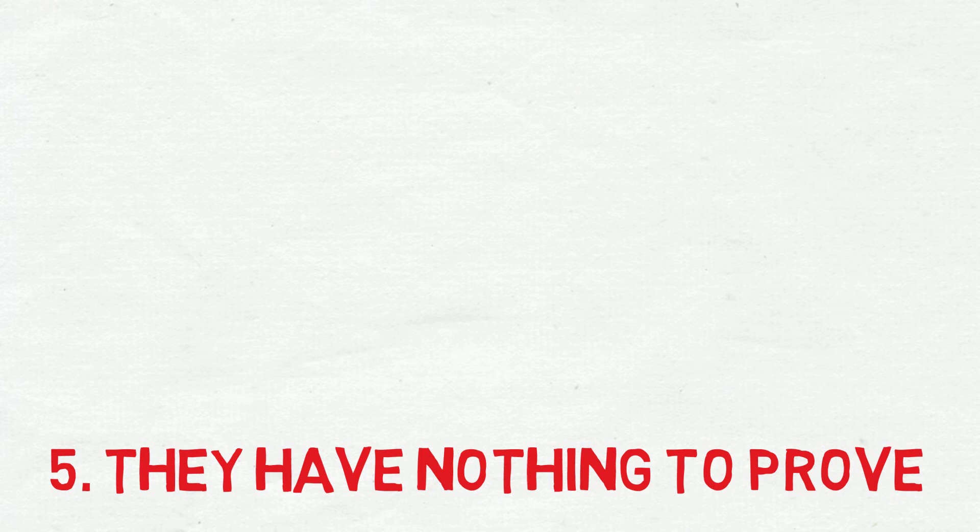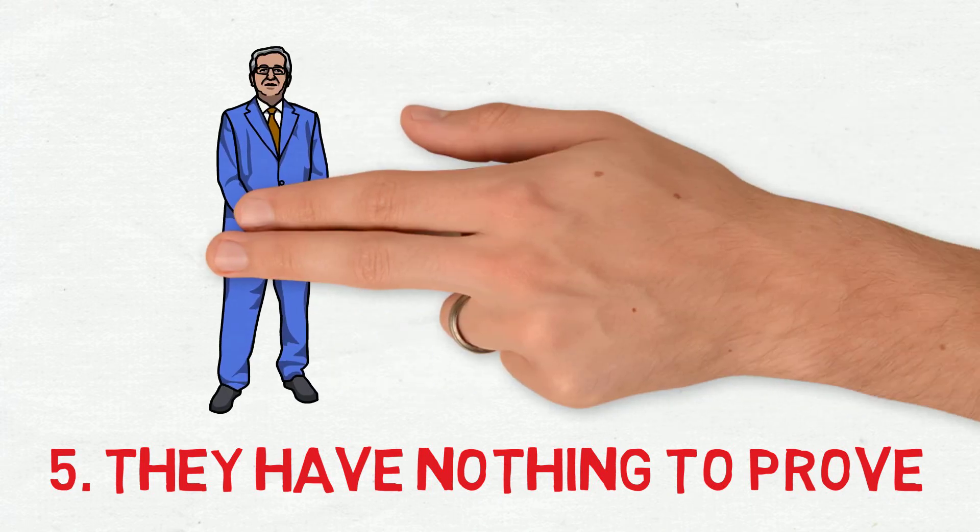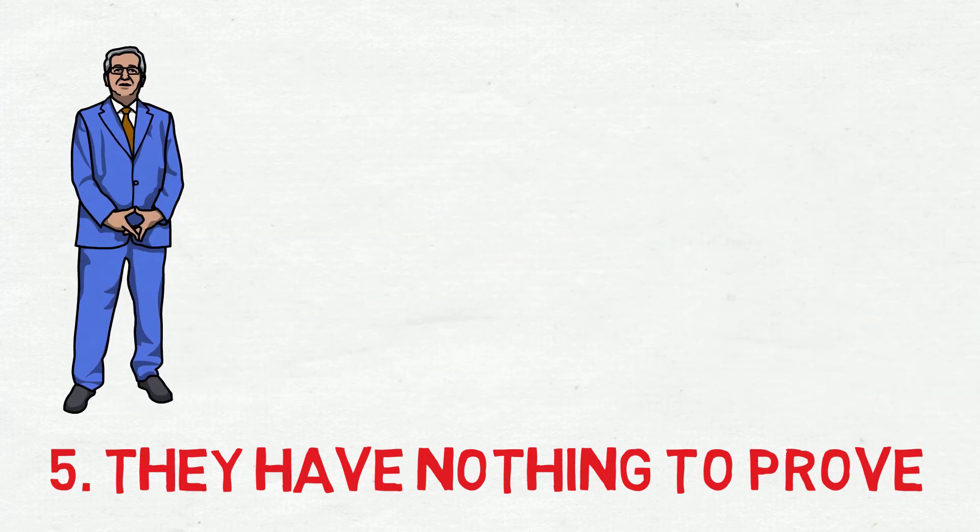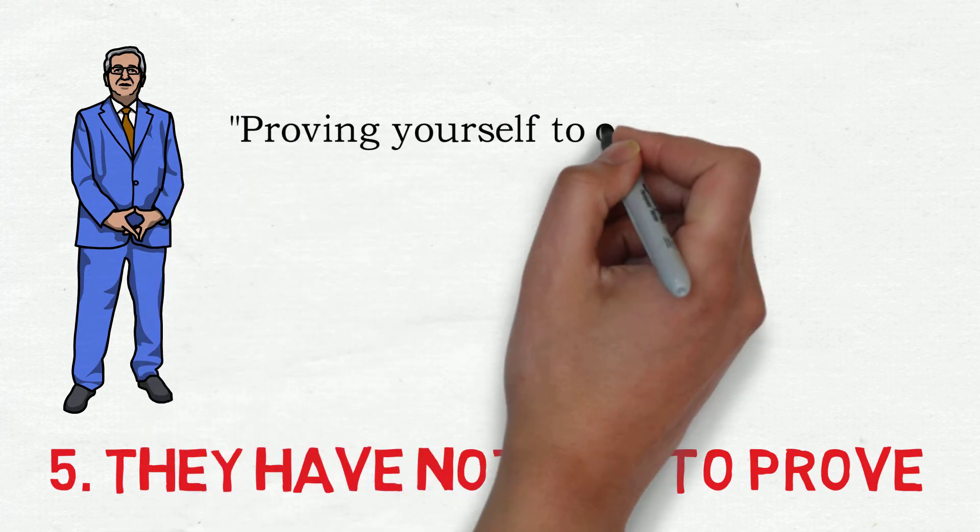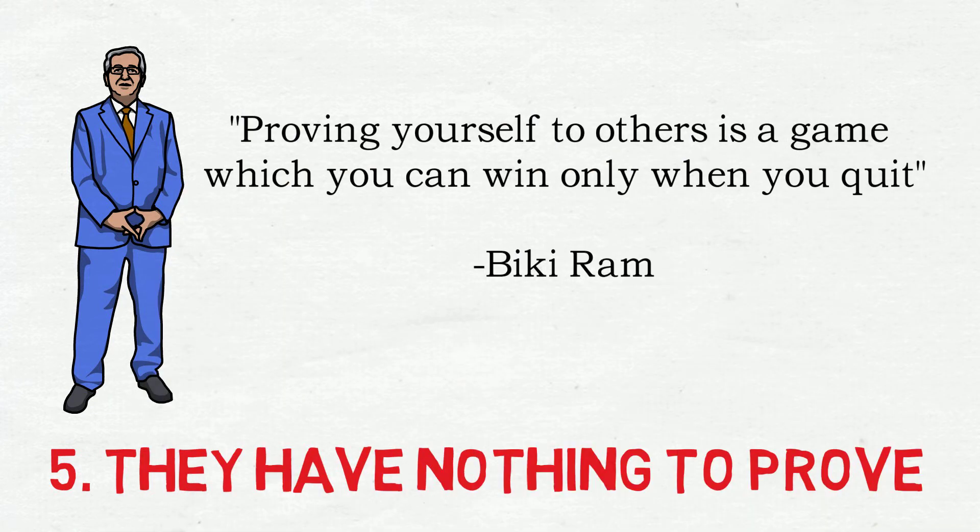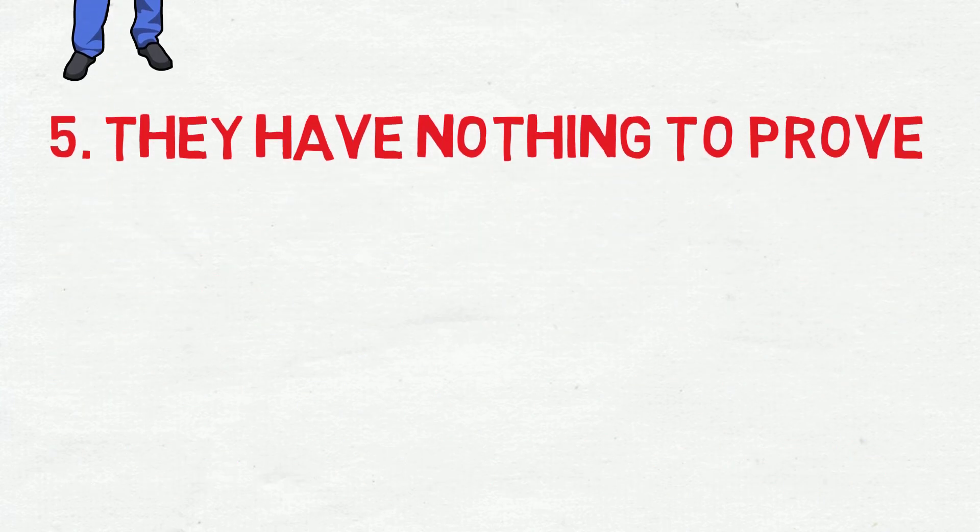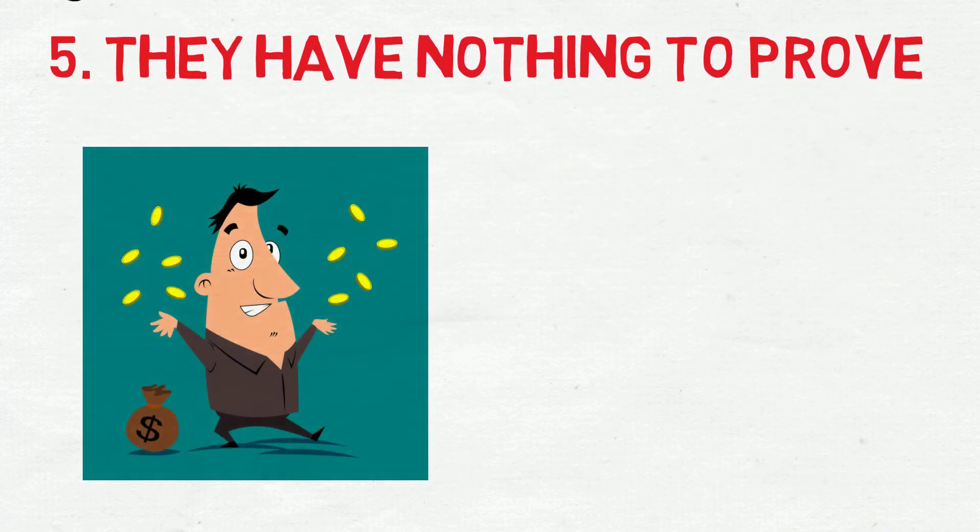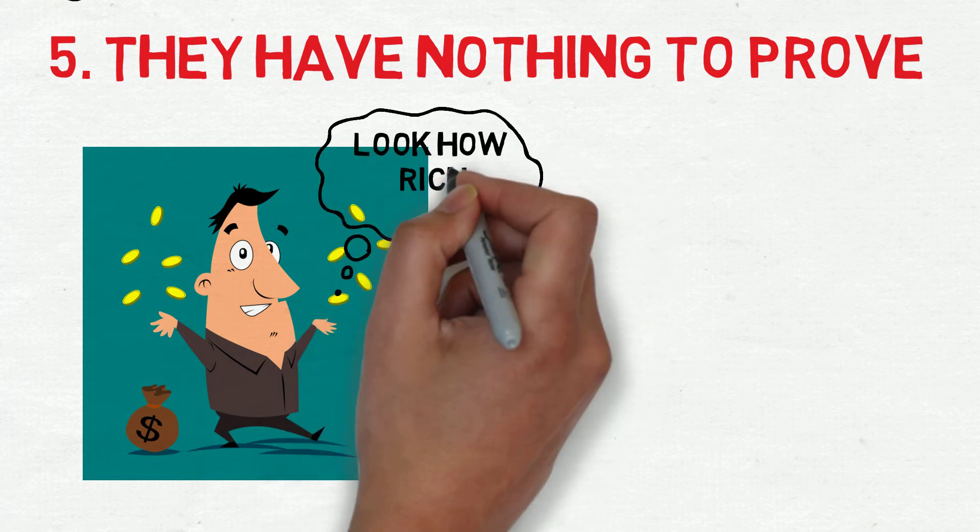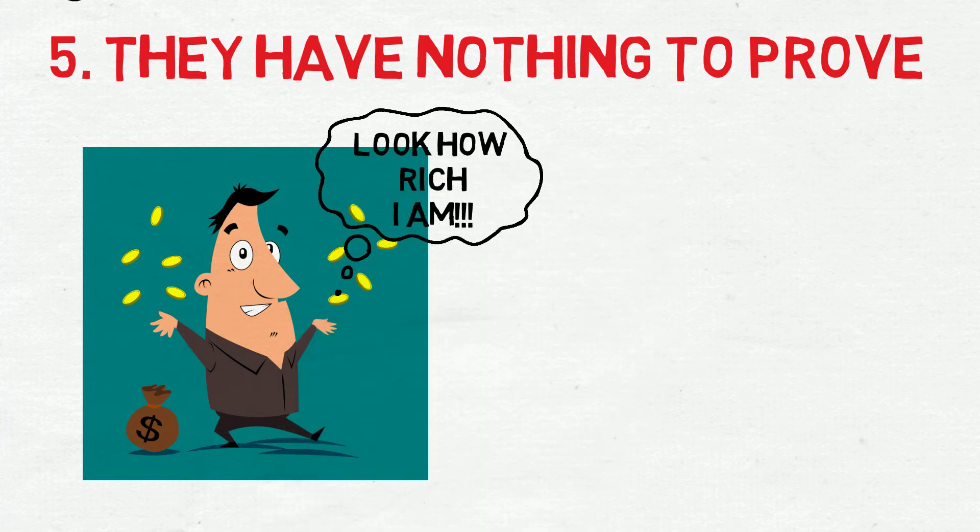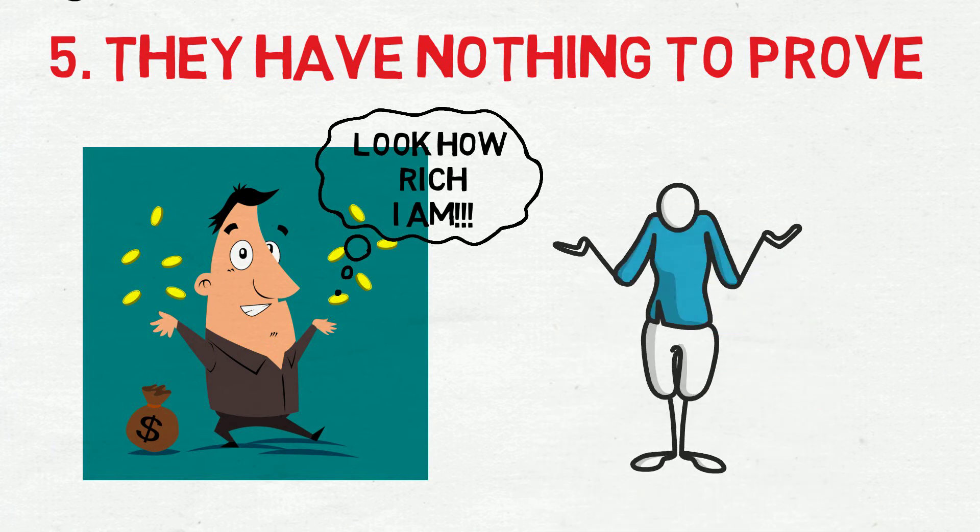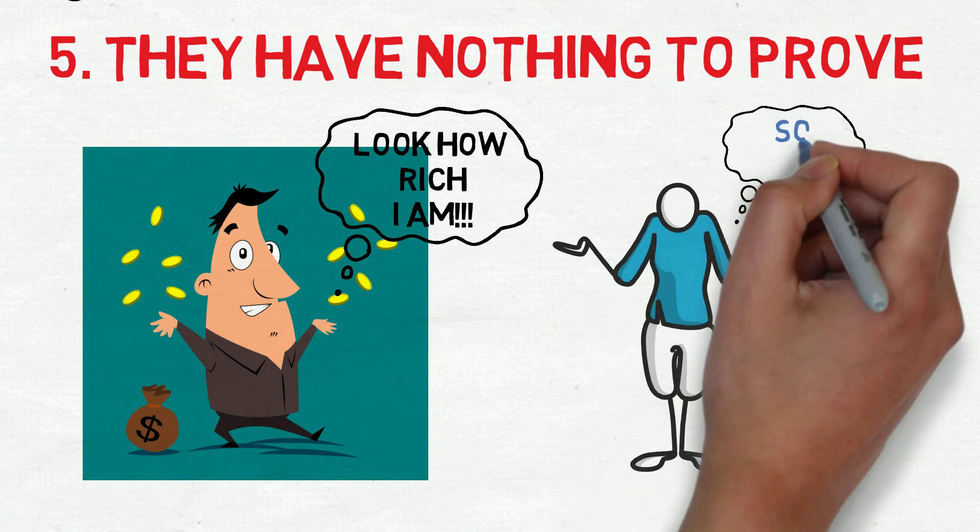Number five, they have nothing to prove. When you are intelligent, you know your worth, and you find it pointless to try and prove it to others. Proving yourself to others is a game in which you can only win when you quit. It is generally the people with lower IQ who are always trying to show you how smart they are, how cool they are, etc. Smart people just are smart. They are happy by themselves, and they are strong and independent.